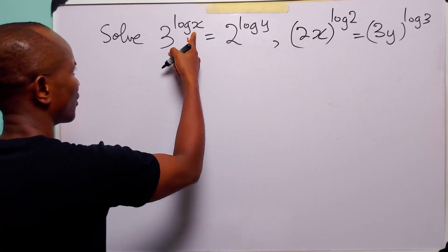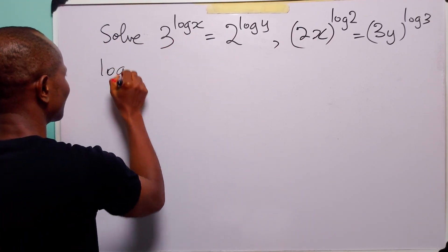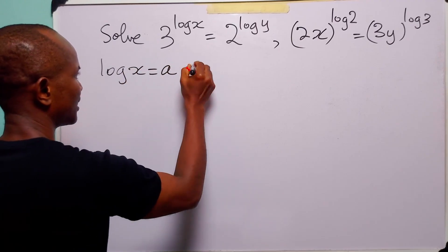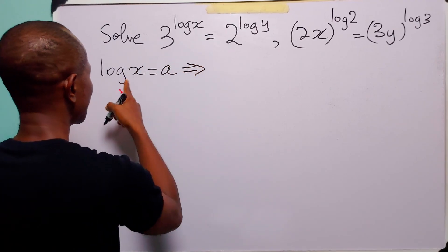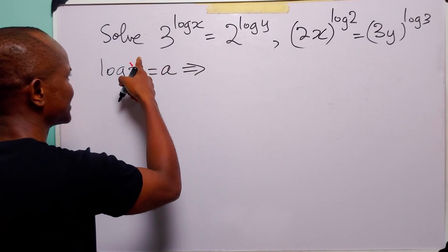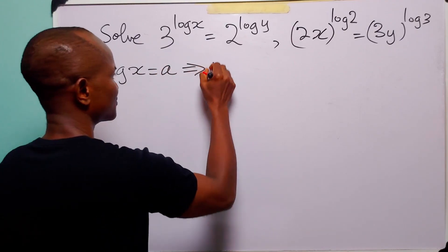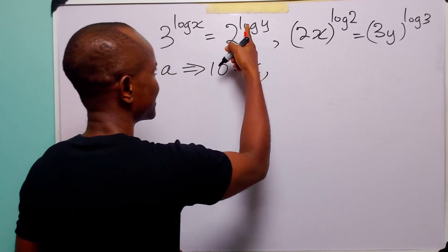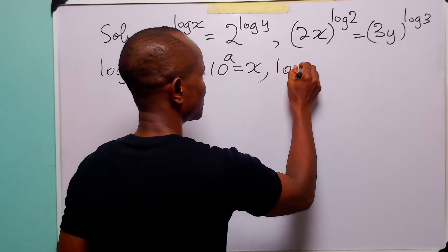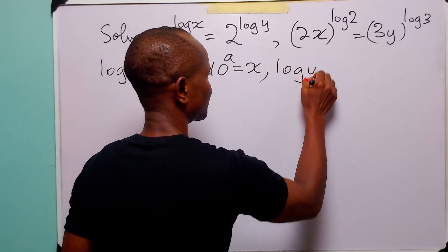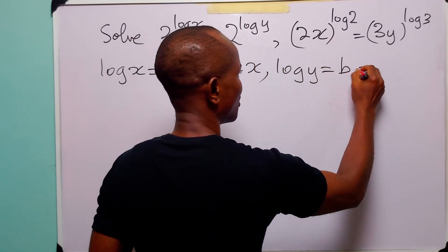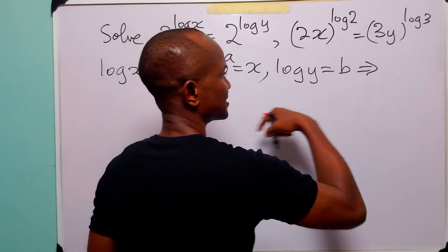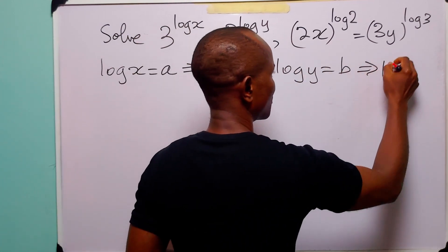Now let log x be equal to a, and from this statement we have that 10 to the power a is equal to x. Likewise, let log y be equal to b. From this statement we have that 10 to the power b is equal to y.